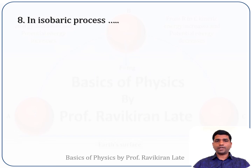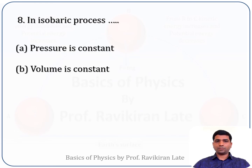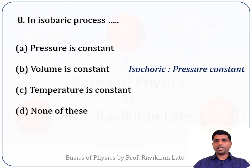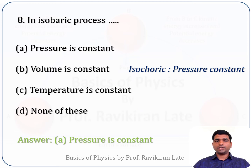Next question: in an isobaric process — option A: pressure is constant, option B: volume is constant, option C: temperature is constant, option D: none of these. In an isobaric process, pressure remains constant. So the correct answer is option A: pressure is constant.